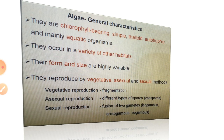Size varies from microscopic Chlamydomonas to giant kelps. They reproduce by vegetative, asexual and sexual methods. Vegetative reproduction is by fragmentation; asexual reproduction by different types of spores, that is zoospores. Sexual reproduction is by fusion of two gametes, which could be isogamous, anisogamous, and oogamous.